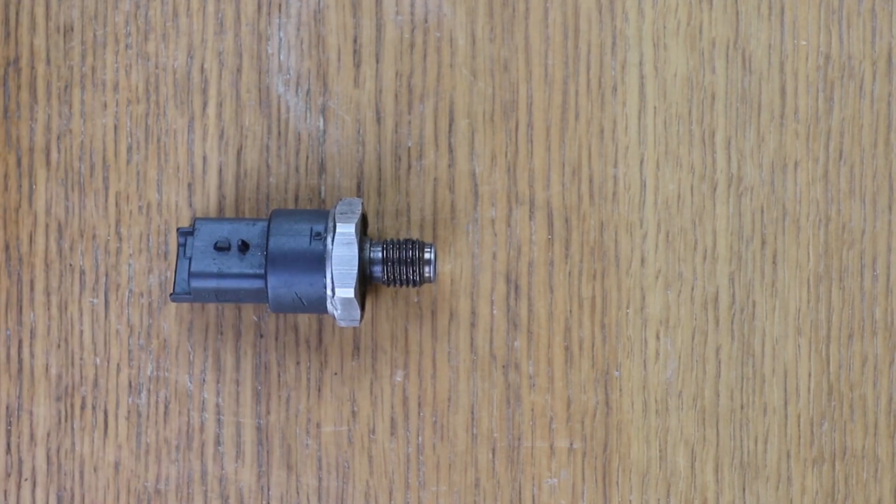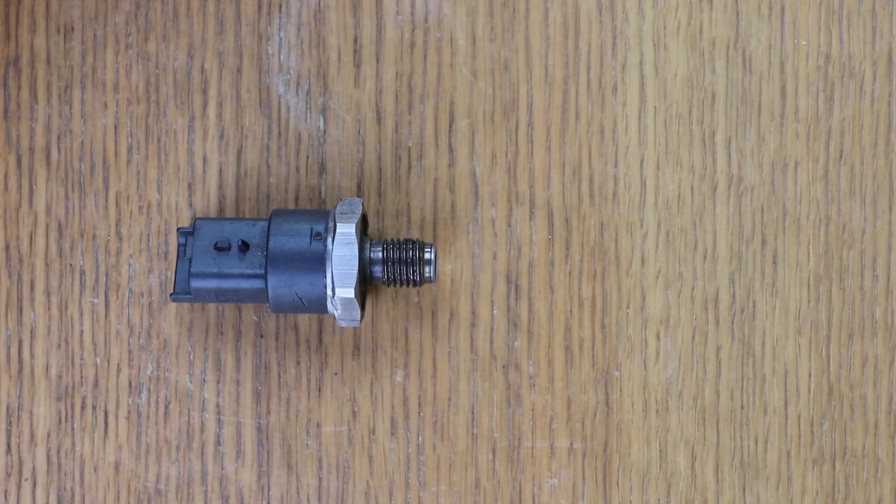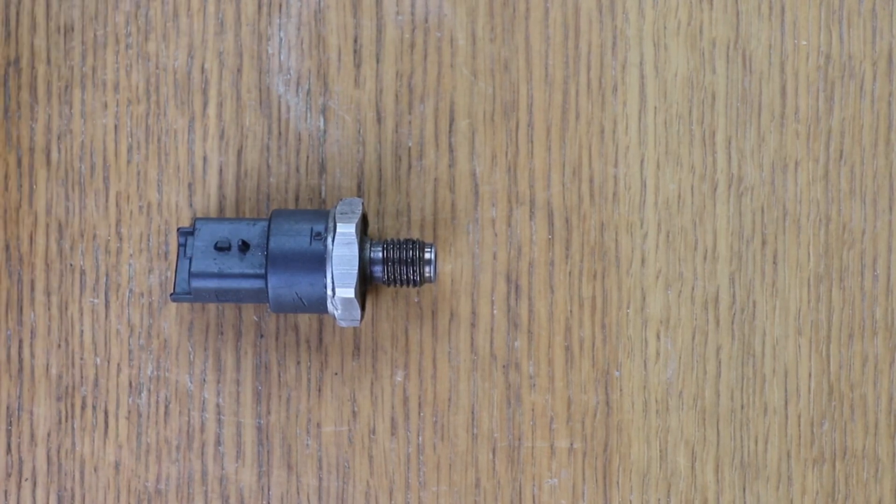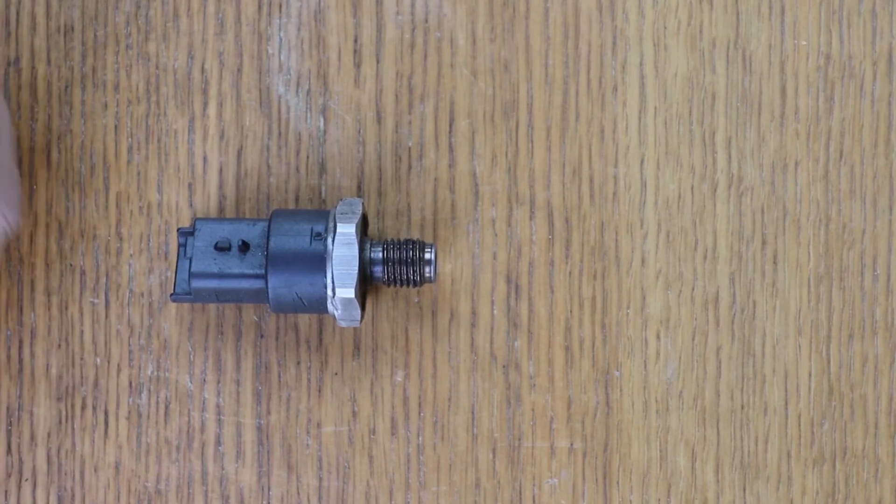He called a friend who has a diagnosis machine and the diagnosis machine showed fault P0190, sensor fault. FRP, the FRP sensor. Its acronym in English is the common rail pressure sensor.